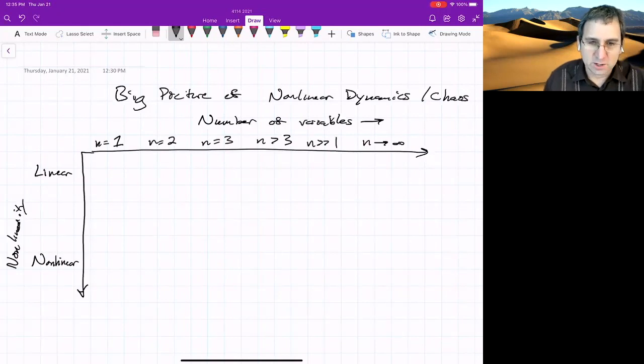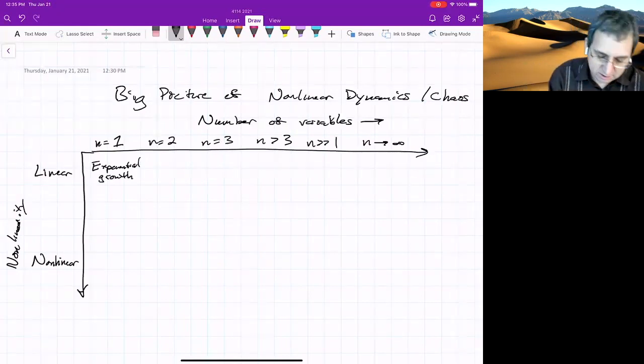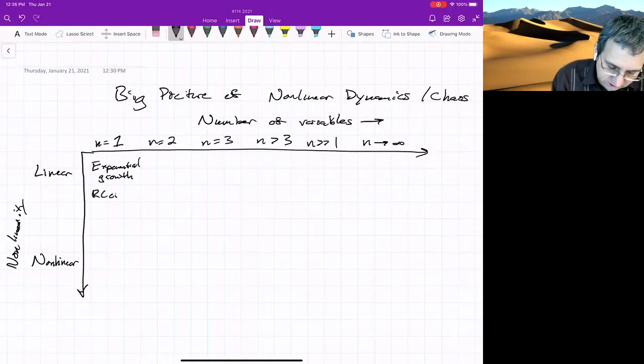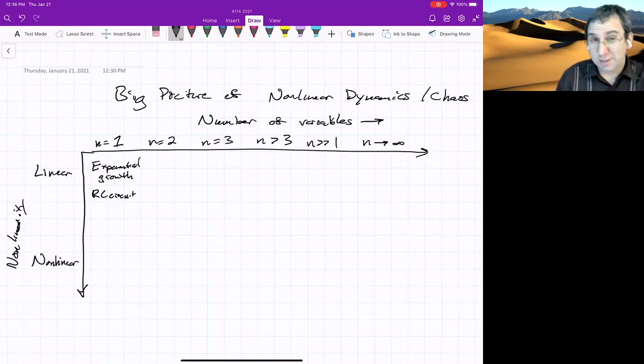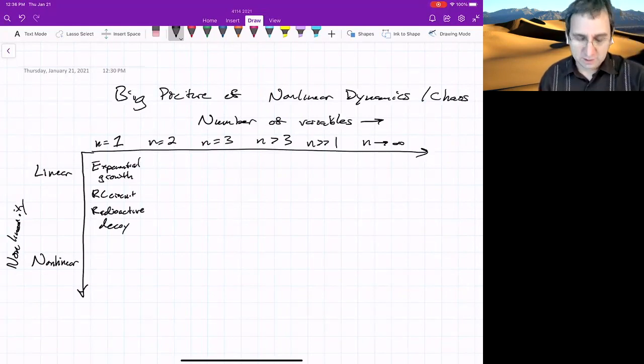For n equals 1, we're talking about things that just have one variable. An example would be exponential growth of a population, like bacteria in a Petri dish growing, or an RC circuit modeling charge or current or something. Radioactive decay. These things are all described by ordinary differential equations that are linear. The equations are linear.